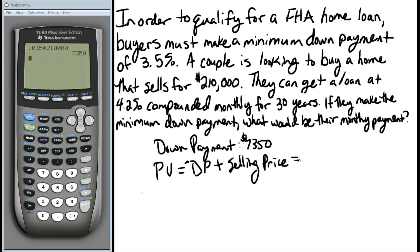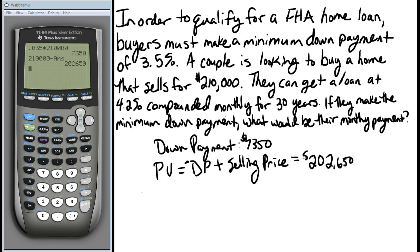On the calculator: two hundred and ten thousand minus that down payment we just found. We can see that the present value of the loan we're actually going to need is two hundred and two thousand six hundred and fifty dollars. This is how much money we actually need to get a loan for after the seven thousand three hundred and fifty dollar payment has already been made up front.